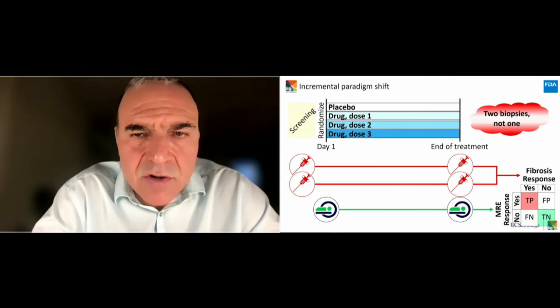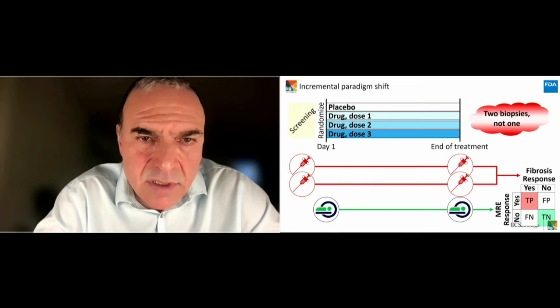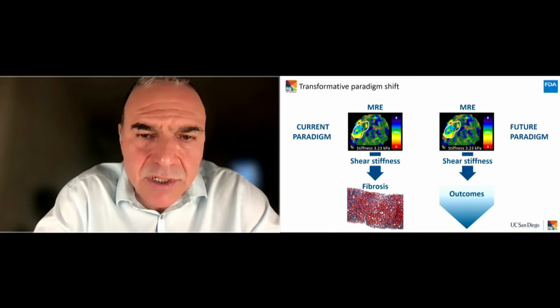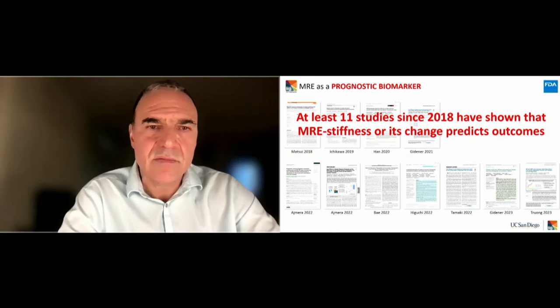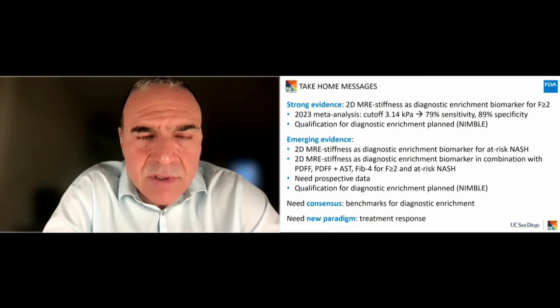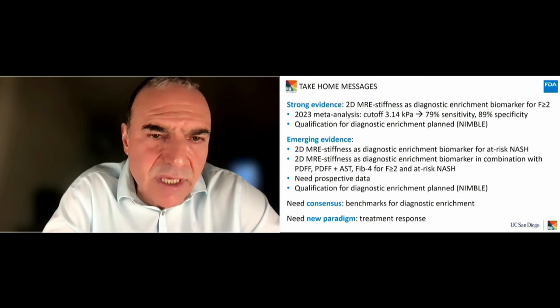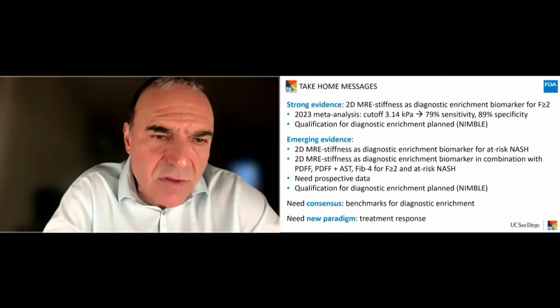We need a new paradigm. An incremental change might be to do two biopsies at baseline and two at end of treatment, though this may simply be impossible. A more transformative paradigm shift would be to link MRE not to fibrosis but directly to clinical outcomes and clinical benefit. There have been at least 11 studies since 2018 showing that MRE stiffness or its change predicts outcome. In summary: there is strong evidence that 2D MRE stiffness can be a diagnostic enrichment biomarker for fibrosis greater than or equal to 2, emerging evidence for at-risk NASH, but we need a new paradigm for qualifying MRE to assess treatment response. Thank you. I turn the floor over to Scott Reeder, who will speak about proton density fat fraction as well as T1 relaxation.